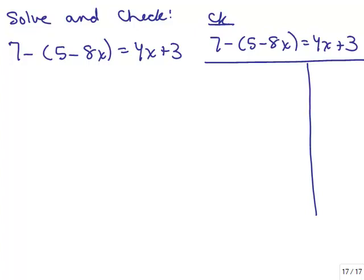Now I'm going to do it. The right-hand side is simplified, but the left-hand side has parentheses again, so I'm going to have to distribute the minus sign. So I have 7 minus 5 plus 8x. Distributing the minus sign changes the signs of everything inside the parentheses — so instead of plus 5 you get minus 5, and instead of minus 8x you get plus 8x.